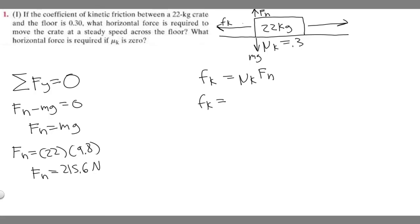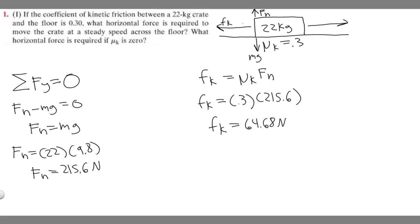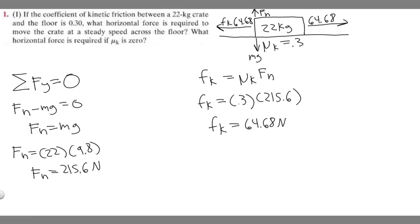Now we can plug it in. F sub k equals 0.3 times F sub n, which is 215.6. So F sub k equals 64.68 newtons. That's the friction force acting against motion. To move the crate at steady speed, the applied horizontal force must also be 64.68 newtons — that's the answer to the first part.